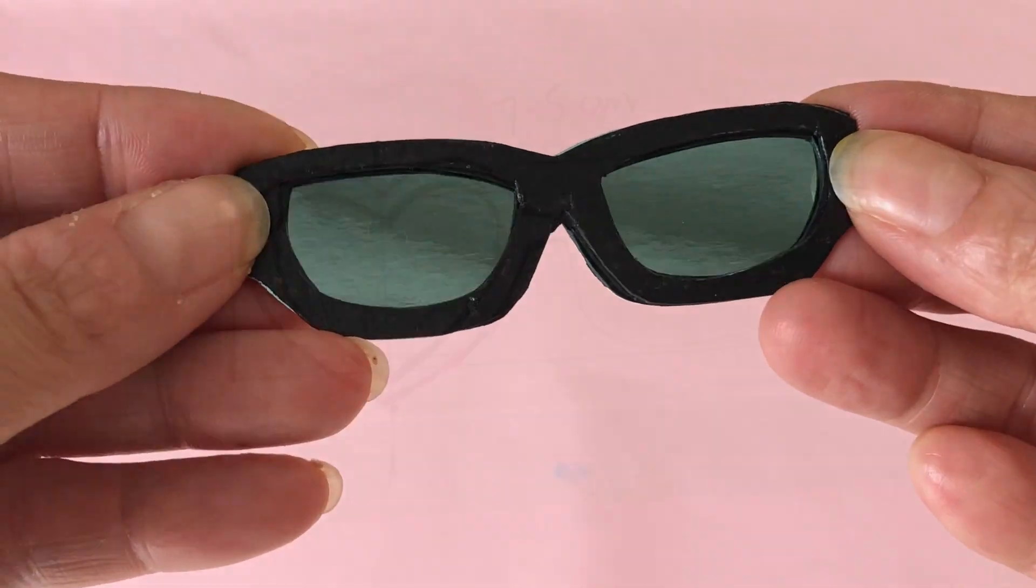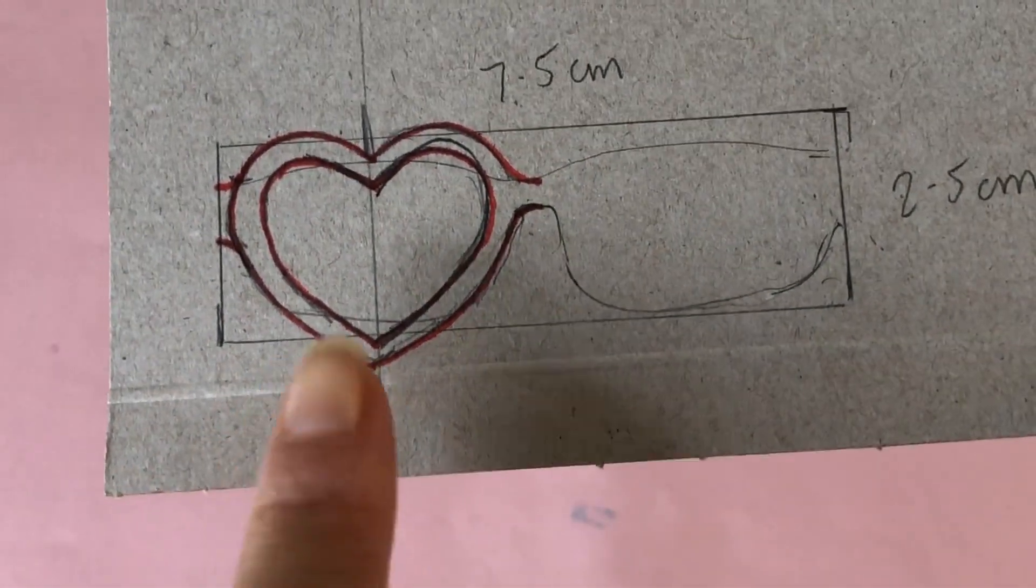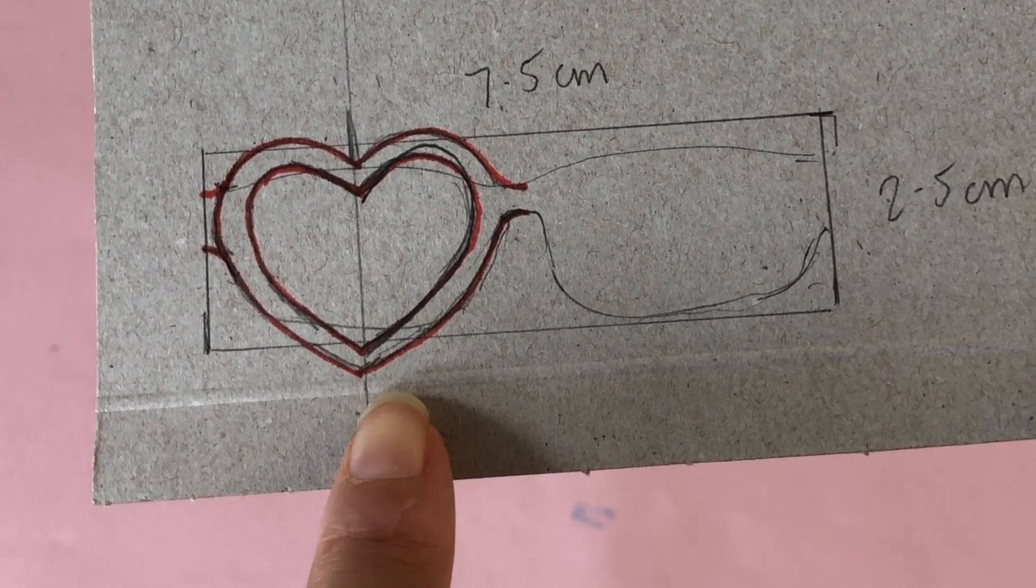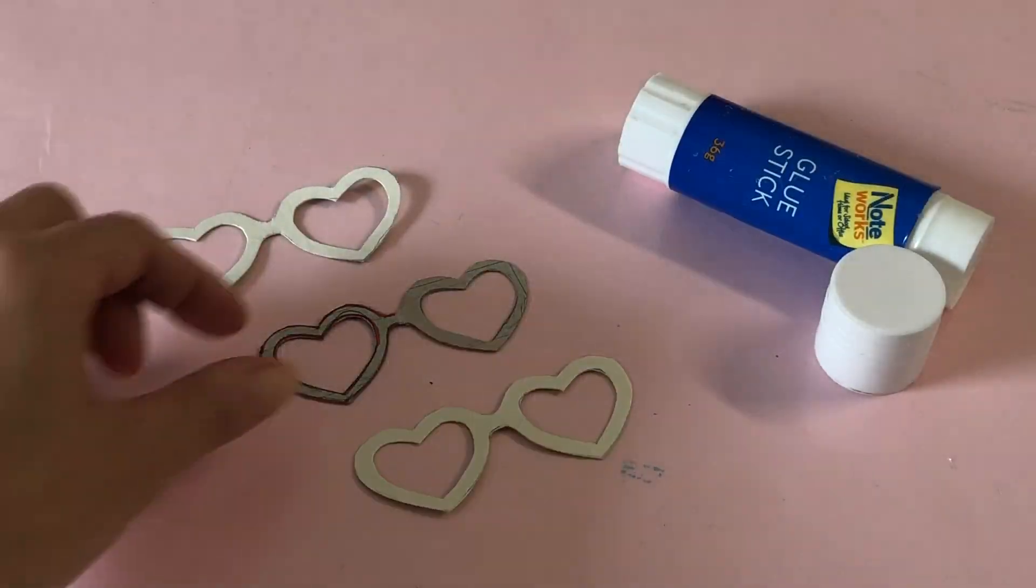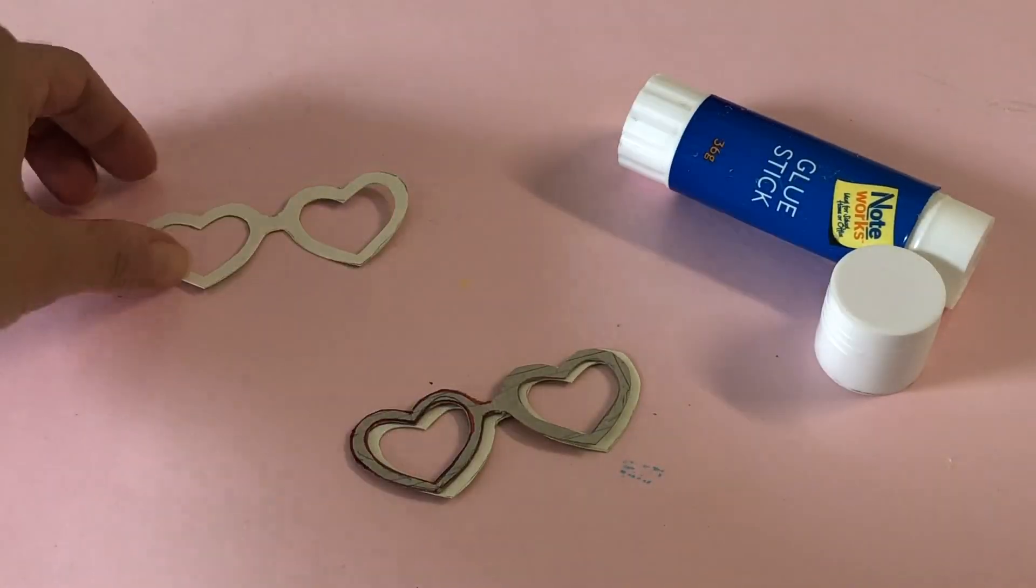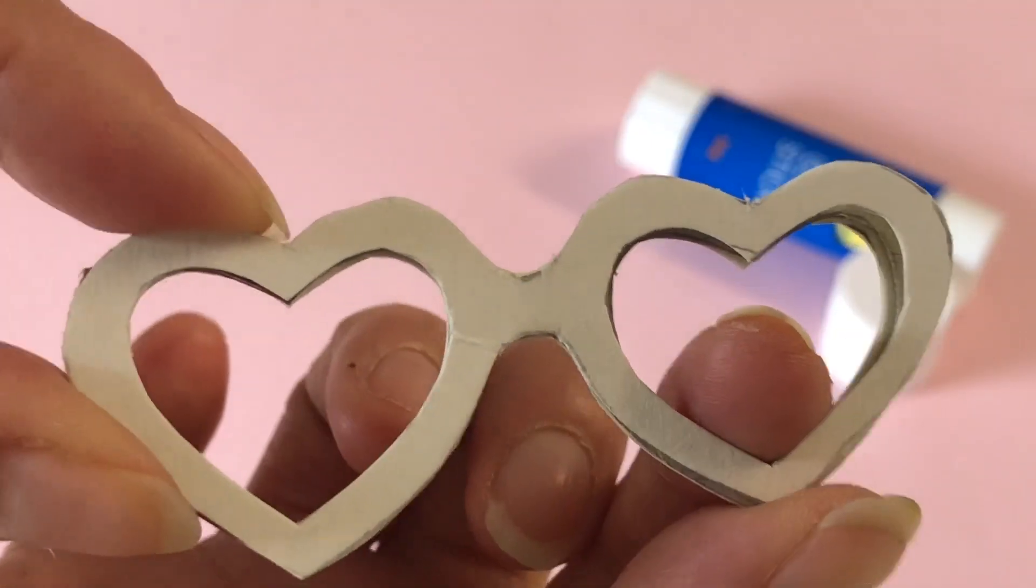For the novelty heart glasses, start with the same outline but draw the top curves and bottom V slightly outside the rectangle. Repeat as before to make a template, then trace, cut, stack and glue three frames together. Paint hot pink.